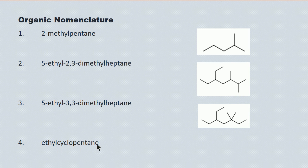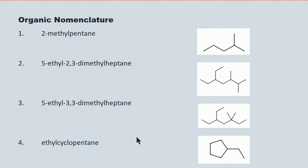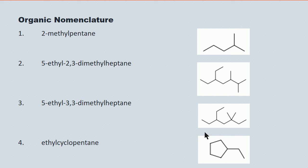Ethylcyclopentane. Cyclopentane will be a ring structure with five carbons in it, and ethyl is a side chain with two carbons. There's our pentane ring and there's our ethyl — one carbon, two carbons. There's no number required here, and this goes back to something I said previously: you only use numbers if need be. In this case, wherever I put this ethyl, we'll have the identical molecule.